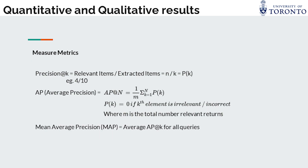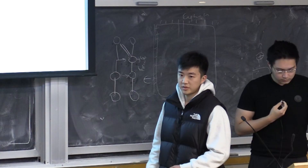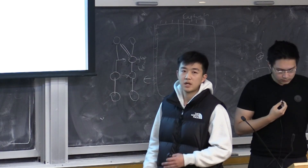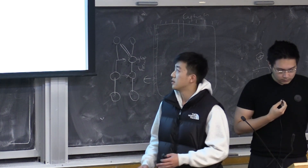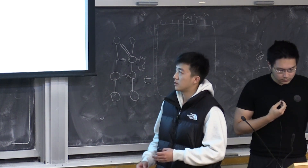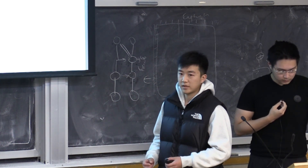We used two metrics to evaluate our model. The first one is precision at k, which is the fraction of relevant items in the top k recommendations. The other one is called average precision at k, which is calculated based on precision at k but only averages out the precision for relevant recommendations.